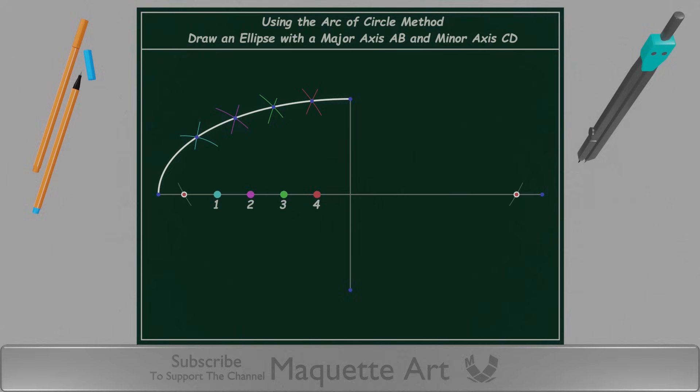Notice that the distance between those points doesn't necessarily have to be equal. For example, if we move this point, it will only change the resulting point position, but it will remain on the ellipse circumference.